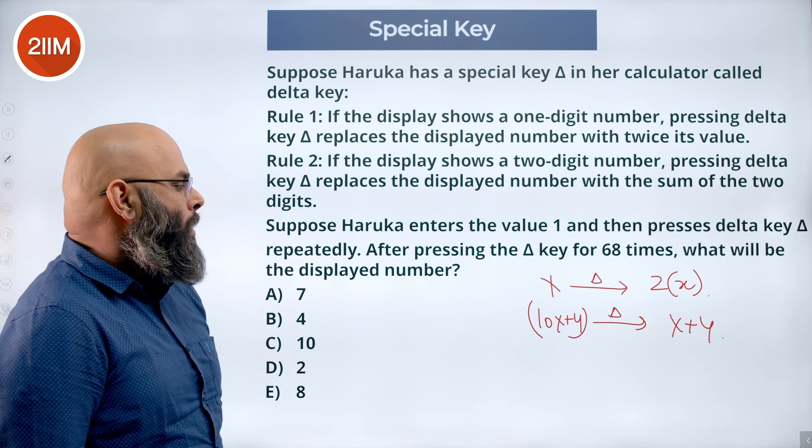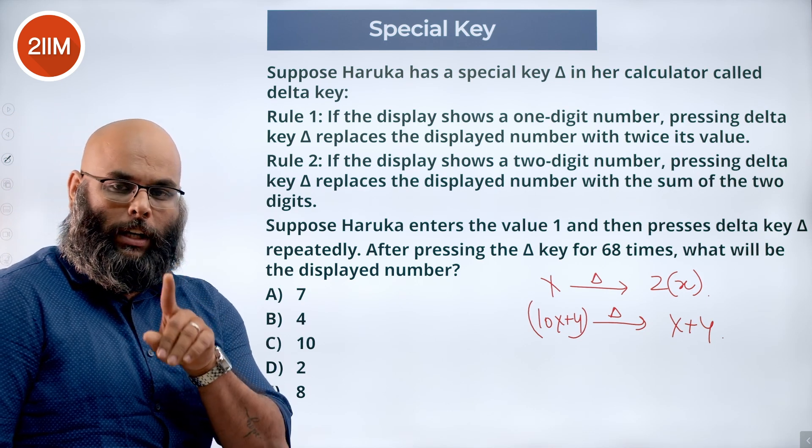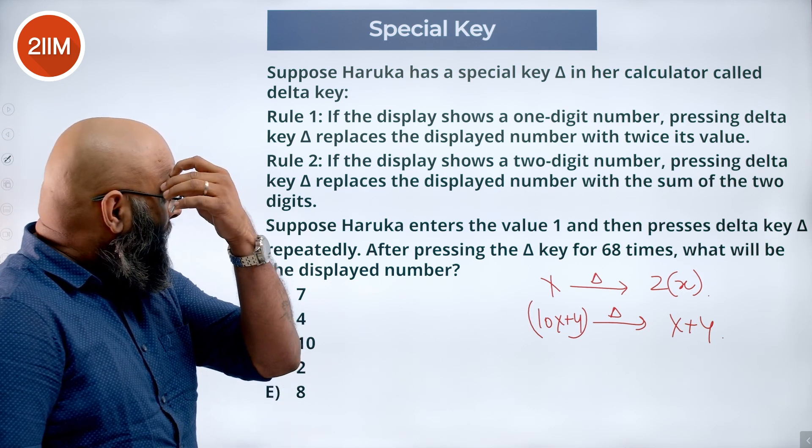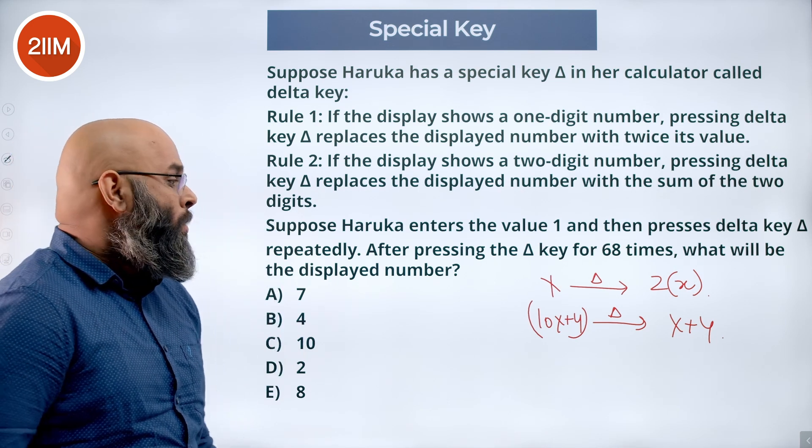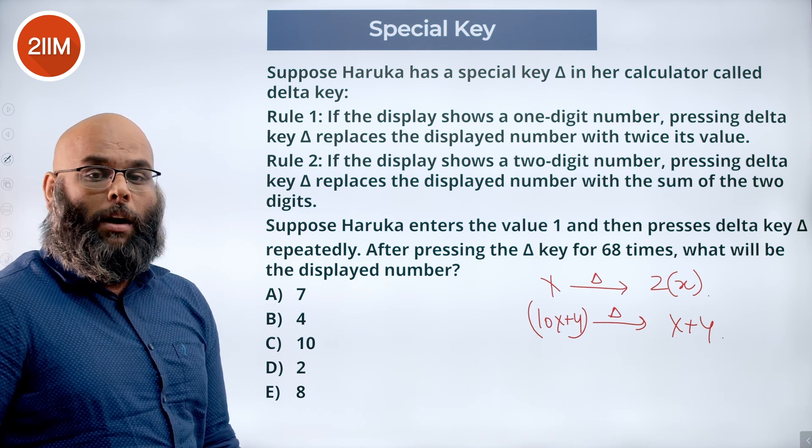Now suppose Haruka enters the value one. She has entered one, the display shows one, and presses the delta key repeatedly. After pressing the key for 68 times, what will be the displayed number?